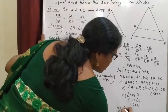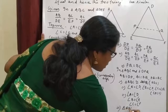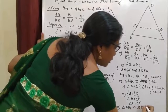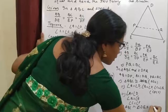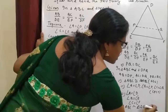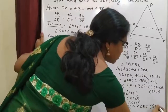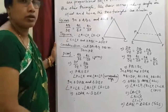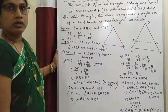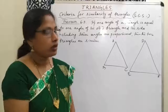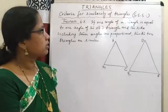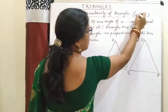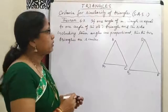So this implies angle A equals angle D, angle B equals angle E, and angle C equals angle F. Hence triangle ABC is similar to triangle DEF by Side-Side-Side similarity. In this way we can prove this. Next theorem is the SAS similarity criterion.